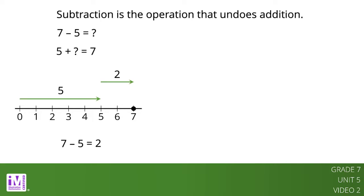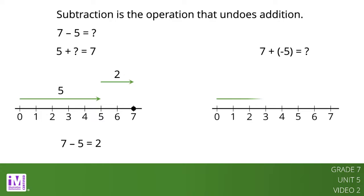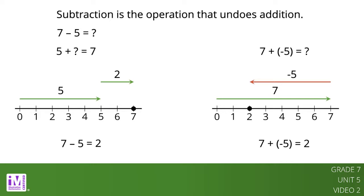Let's consider another expression: 7 plus negative 5. Here is a diagram that illustrates this equation. Notice that the value of 7 plus negative 5 is also 2. We can see that 7 minus 5 has the same value as 7 plus negative 5.